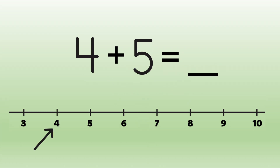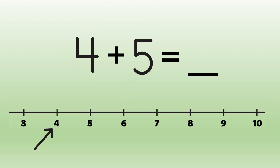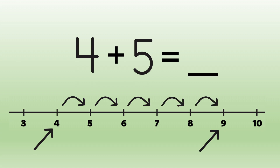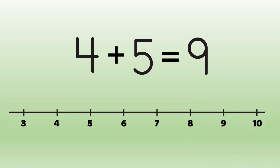Now we look at the second addend. It's five. We count up five from four to find the sum. When we add on a number line, we count up to the right: one, two, three, four, five. We finish on nine. So four plus five equals nine. The sum is nine.